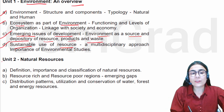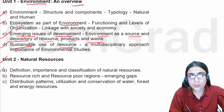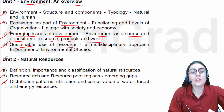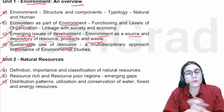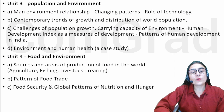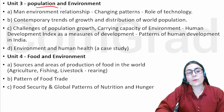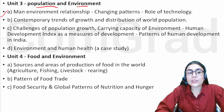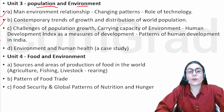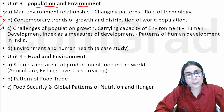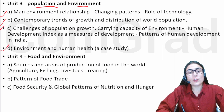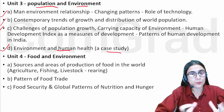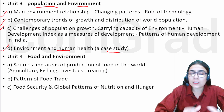The second unit is natural sources. The third unit is population and environment. It covers man-environment relationship, changing patterns, role of technology, contemporary trends of growth and distribution, challenges of population growth, and environment and human health. You will also study case studies. So, population and environment is your third unit.